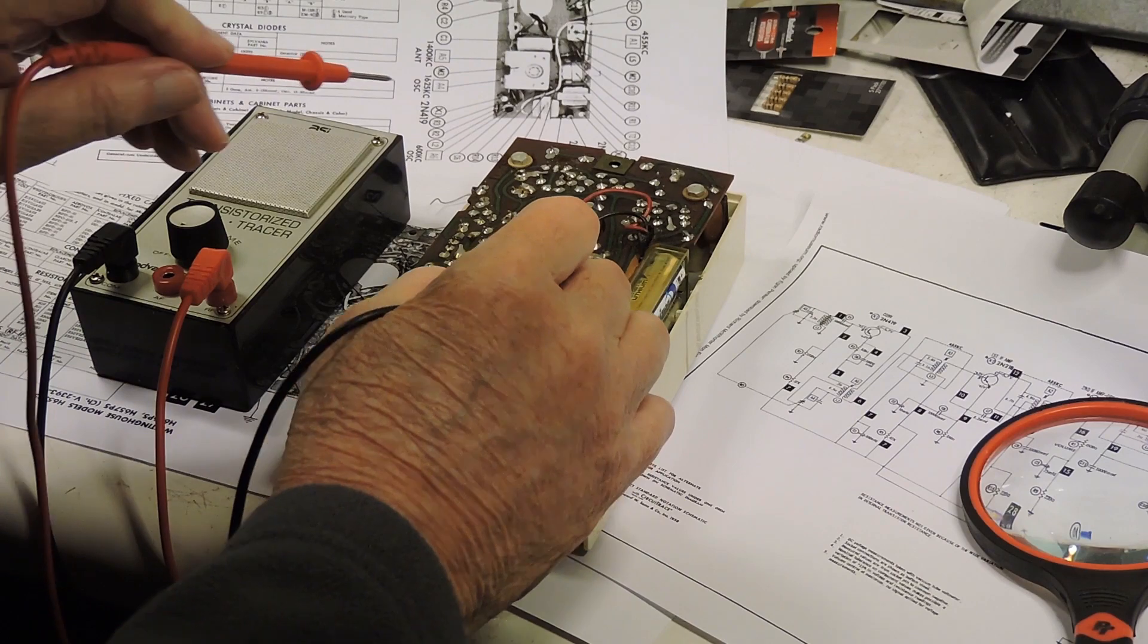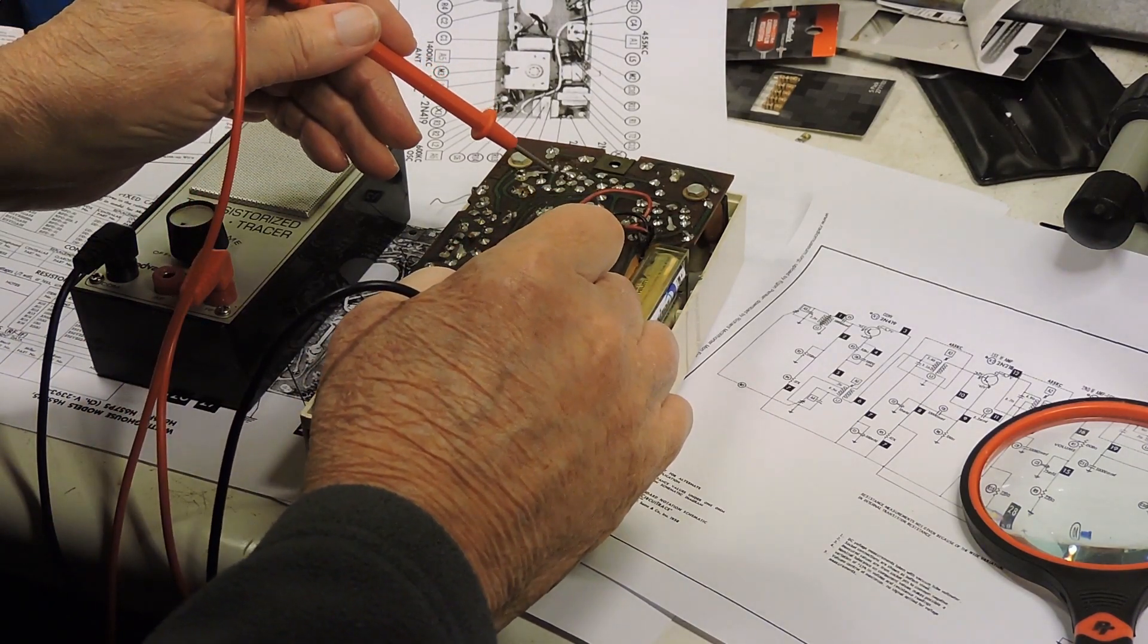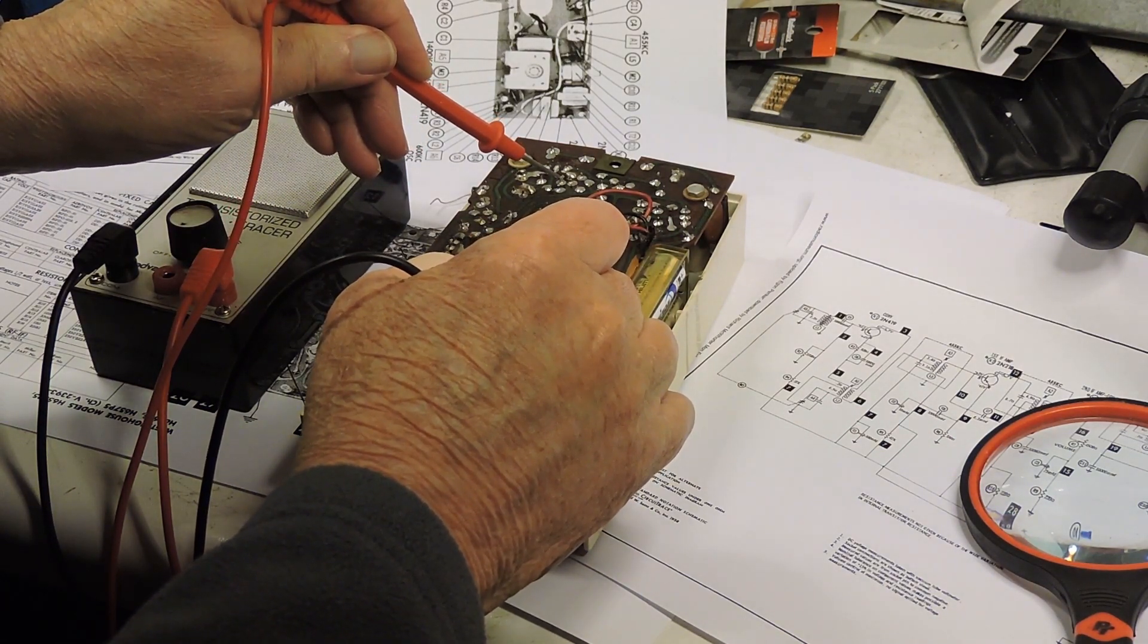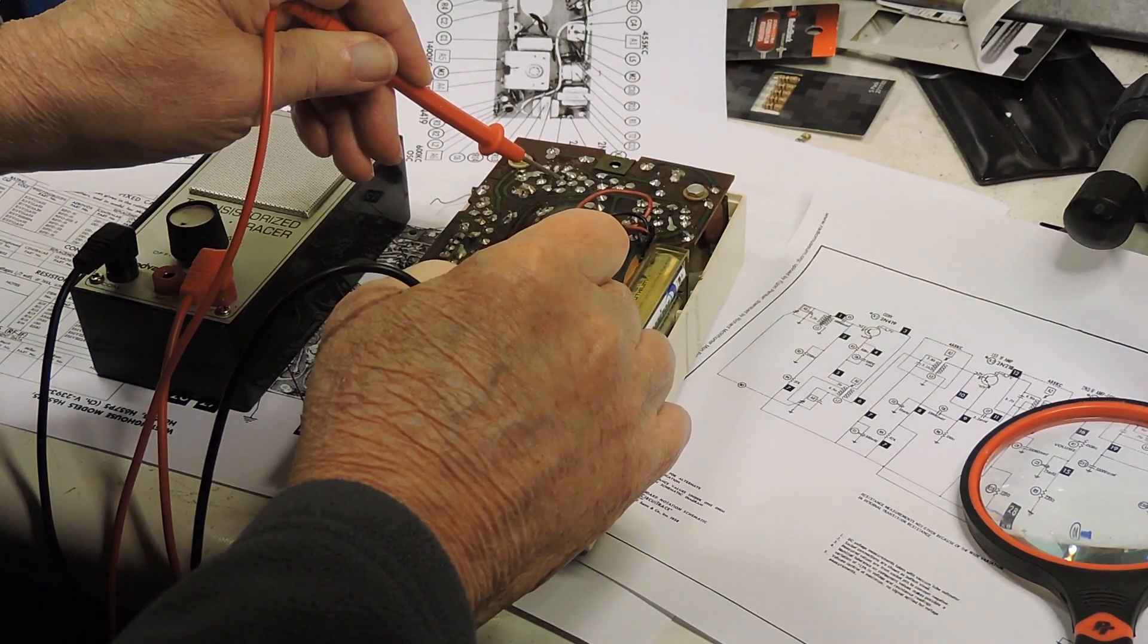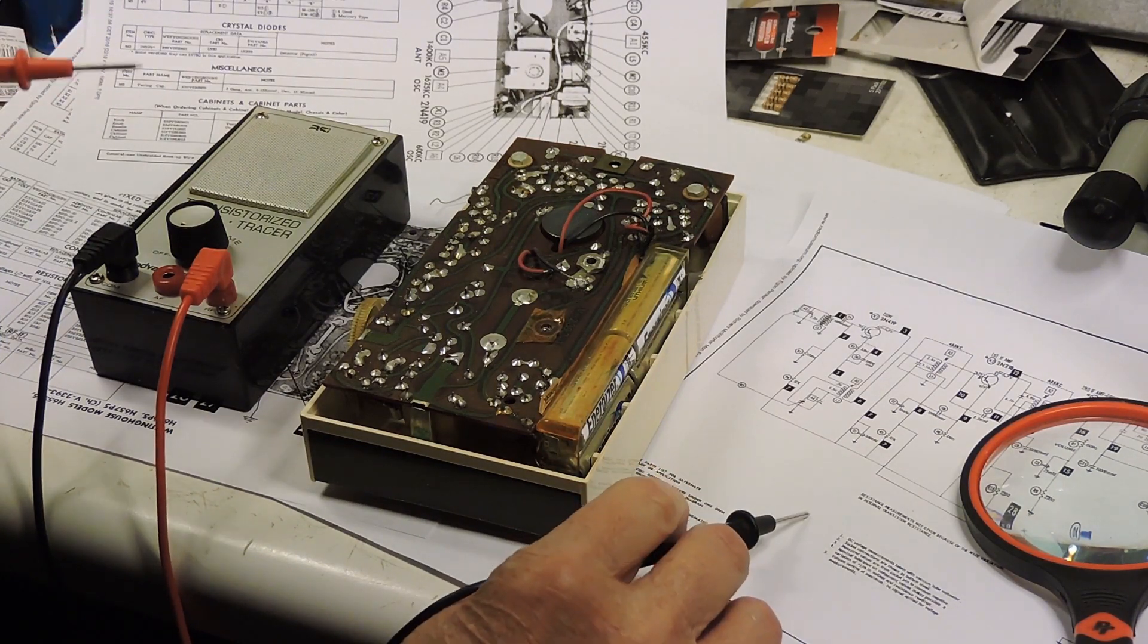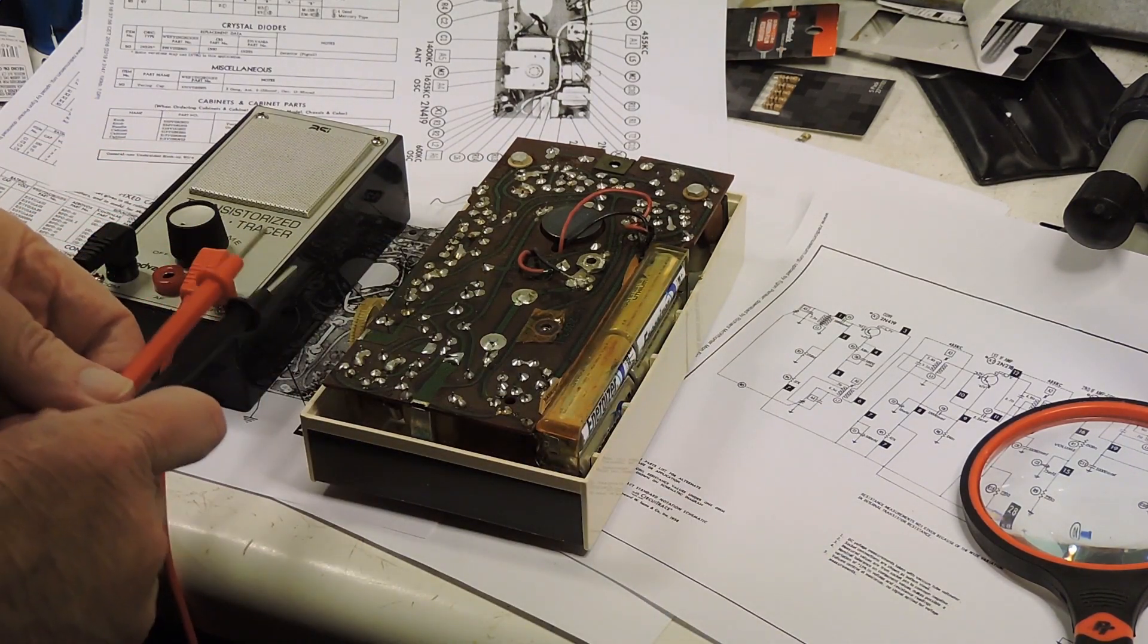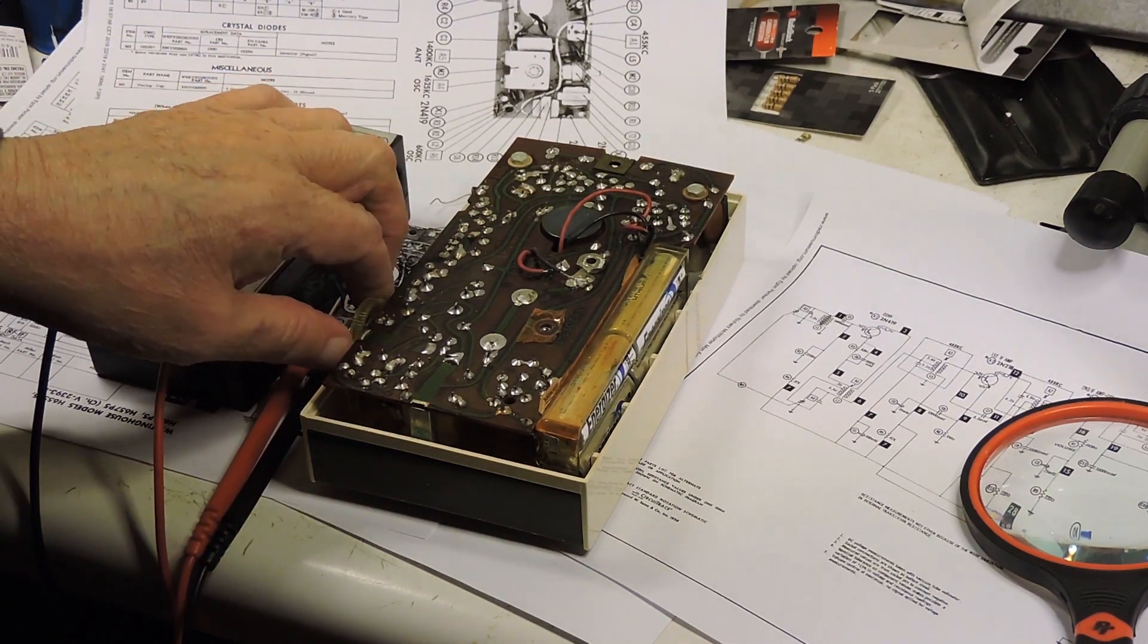Now I just switched to RF frequency, and here I'm at the RF section. I found all these points from the SAMS photo fax that you see the radio's actually laying on. What I found was there's a 100 microfarad capacitor in the front end.